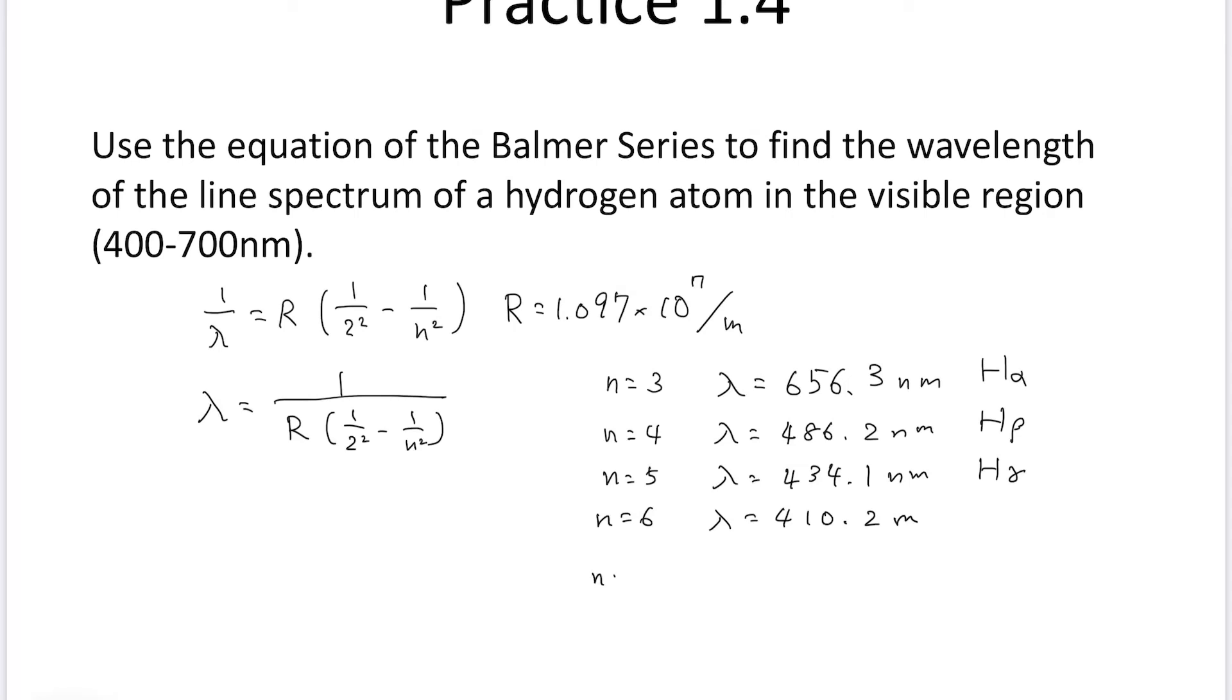If you substitute n equal to 7, this is H delta. Lambda becomes 397.0 nanometers.